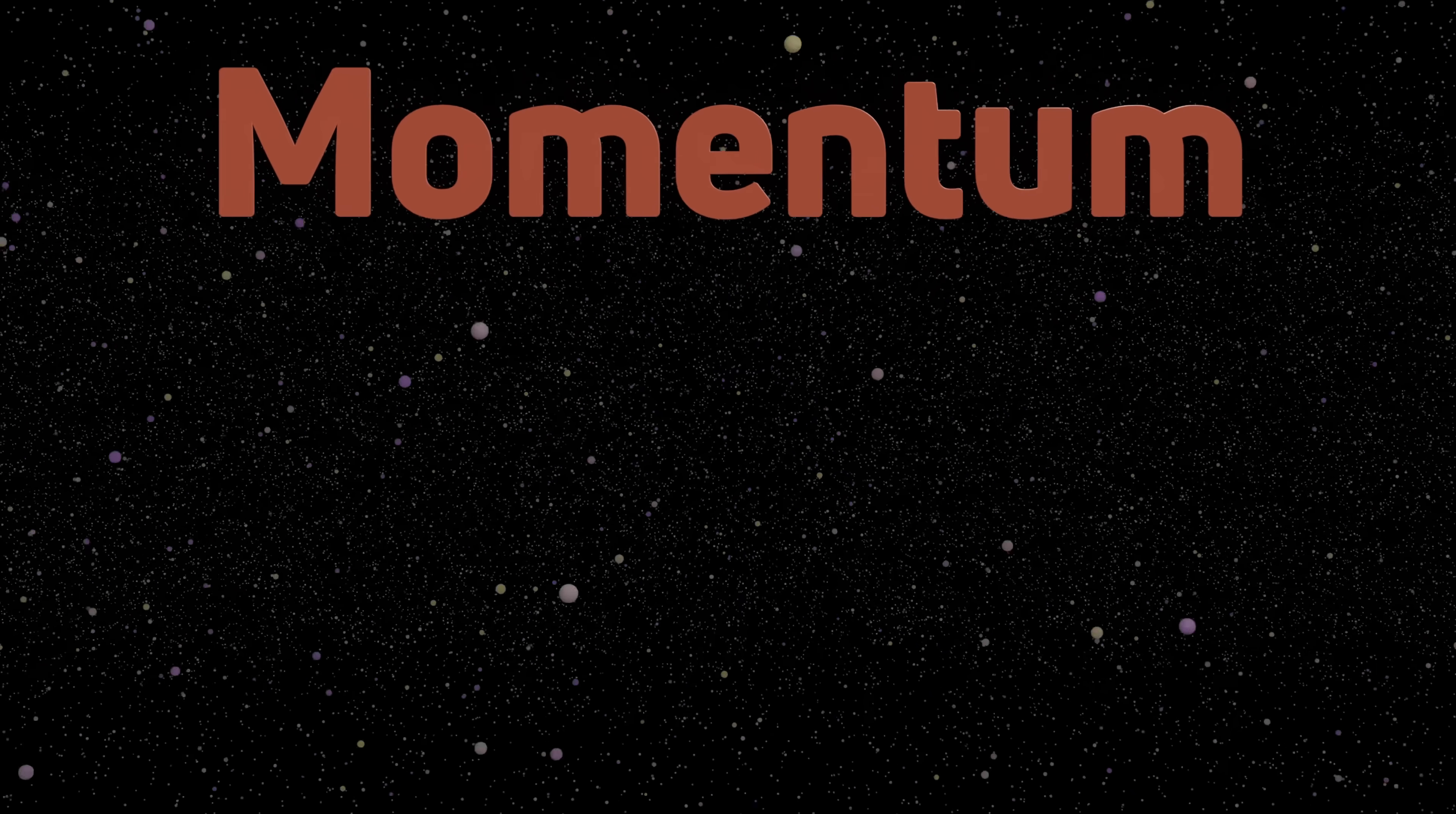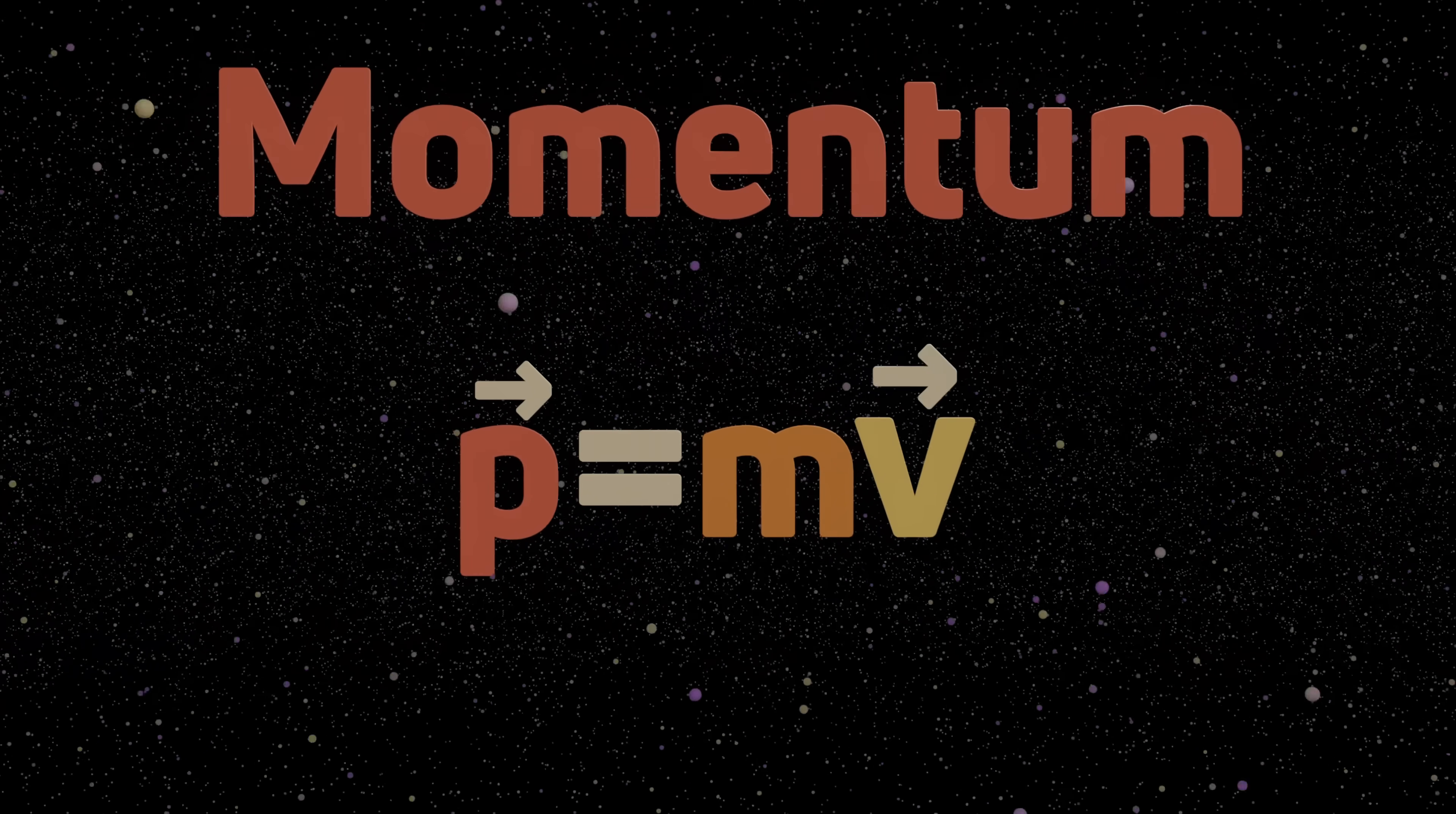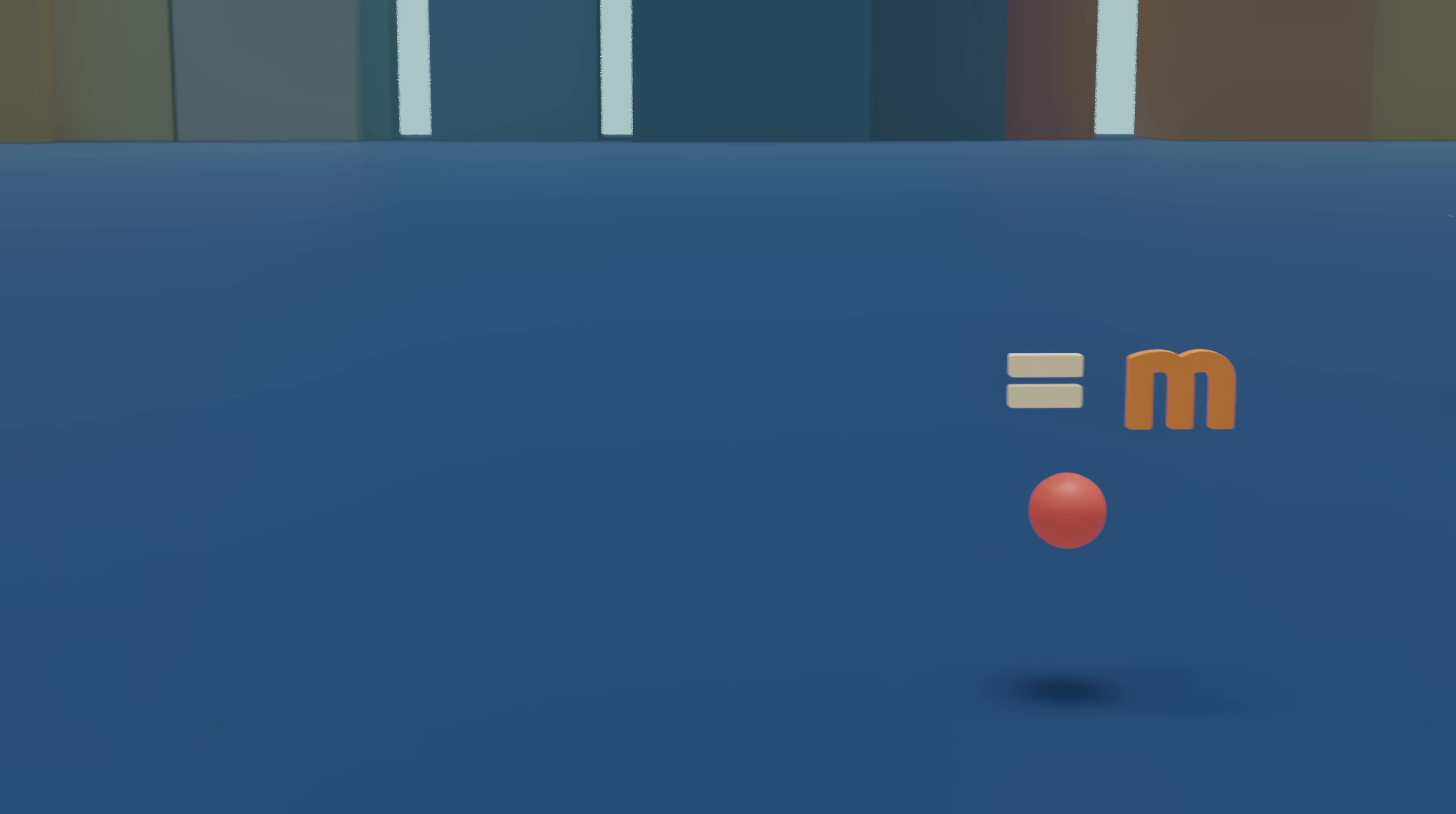Okay. Momentum. Momentum is the ferocity of your motion through space. It's a really simple equation. Momentum equals mass times velocity. It's pretty easy to see that if something has zero velocity, it has zero momentum. The issue with that assumption is there's no such thing as zero velocity.